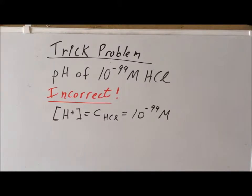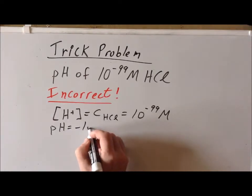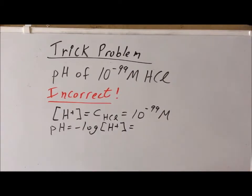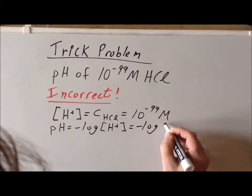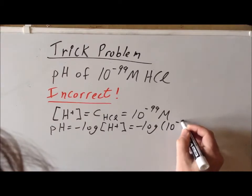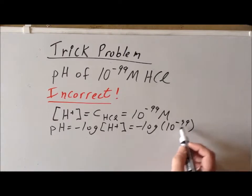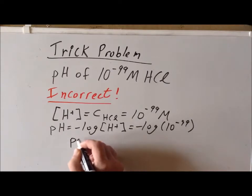Then we want to use the definition of the pH, and we know that the pH is the negative log of the hydrogen ion concentration. So in this particular case, this is going to be the negative log of 10 to the minus 99. We don't even need our calculator for this particular problem, since we can do the logs of powers of 10 in our head, and we see immediately that the log of 10 to the minus 99 is minus 99 multiplied by the leading minus 1 in front, and we are left with the result that the pH is 99.